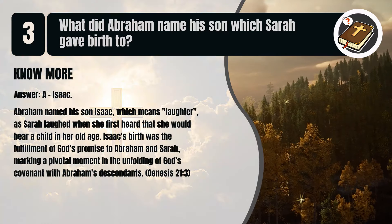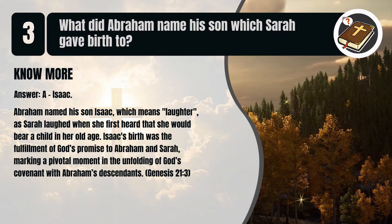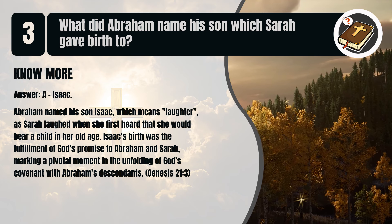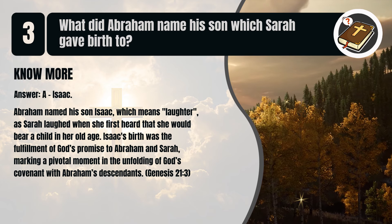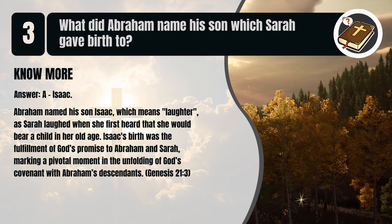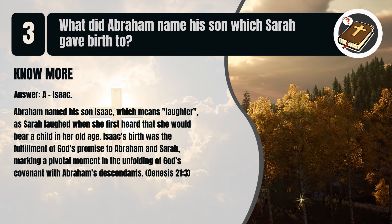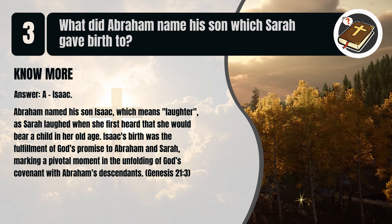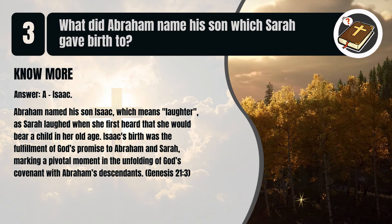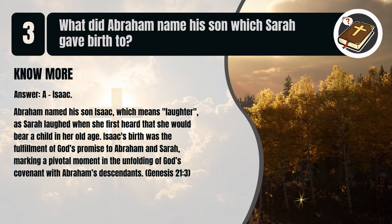That's A. Isaac. Abraham named his son Isaac, which means laughter, as Sarah laughed when she first heard that she would bear a child in her old age. Isaac's birth was the fulfillment of God's promise to Abraham and Sarah, marking a pivotal moment in the unfolding of God's covenant with Abraham's descendants. Genesis chapter 21 verse 3.